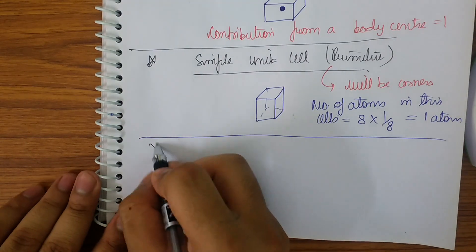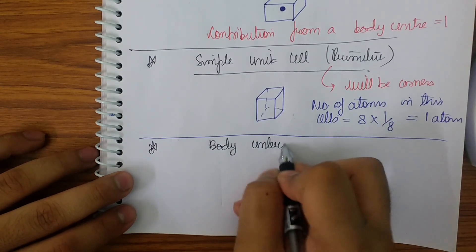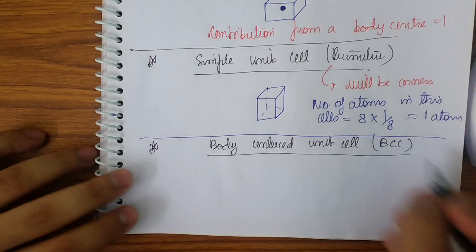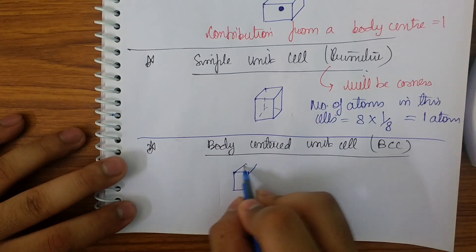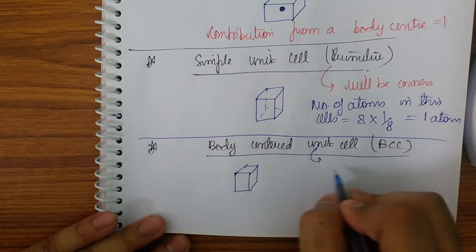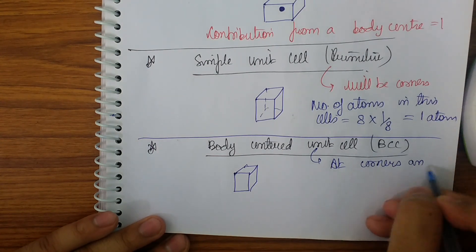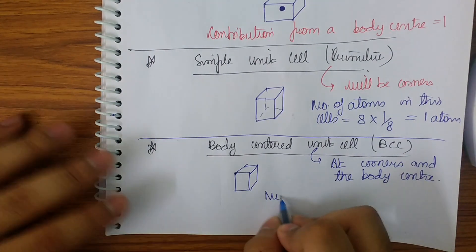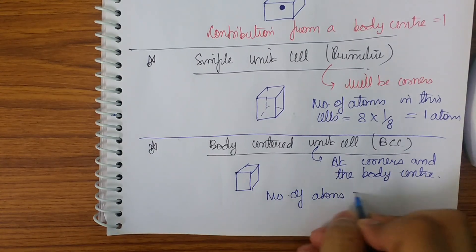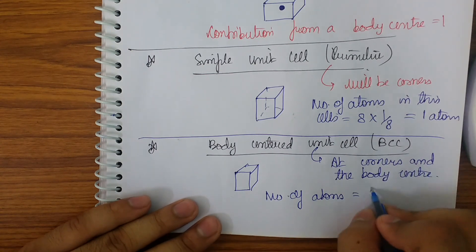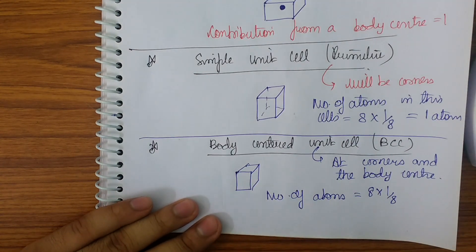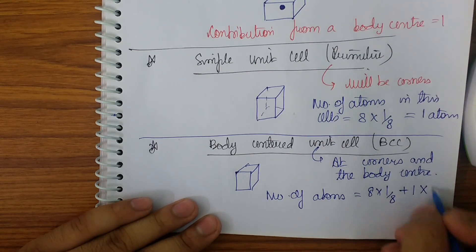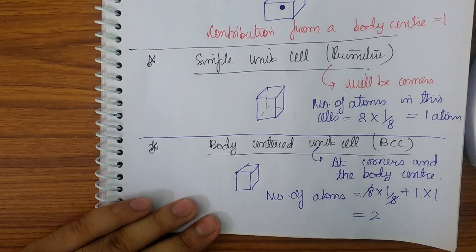Now let us take the case of a body centered unit cell, also known as BCC. In this case I will be having atoms at corners and at the body center. So the number of atoms = 8 corners × (1/8) + 1 body center × 1 = 1 + 1 = 2. So the number of atoms in the BCC will be two.